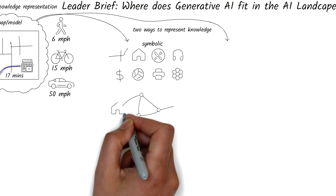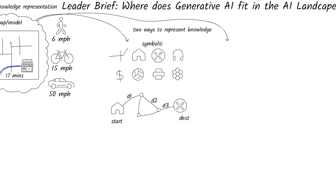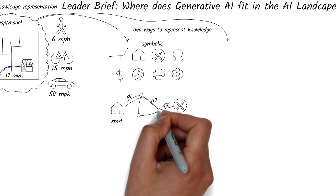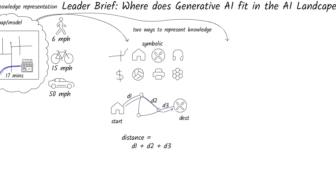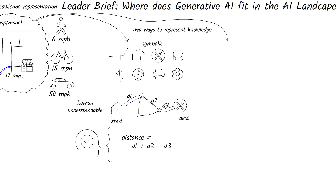As symbols, your home may be the starting point, the restaurant the destination, and the road links with lengths and connections with other roads. You can then program the computer to find the time to travel between your home and the restaurant. This is a human understandable representation of the real world.